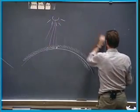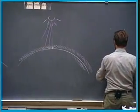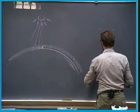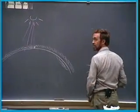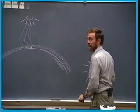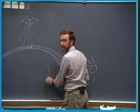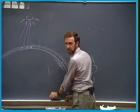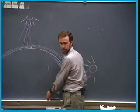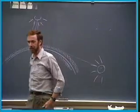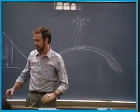How about at sunset? At sunset when you look at the sun, it ain't white anymore — it's sort of orange. We can actually do this experimentally.